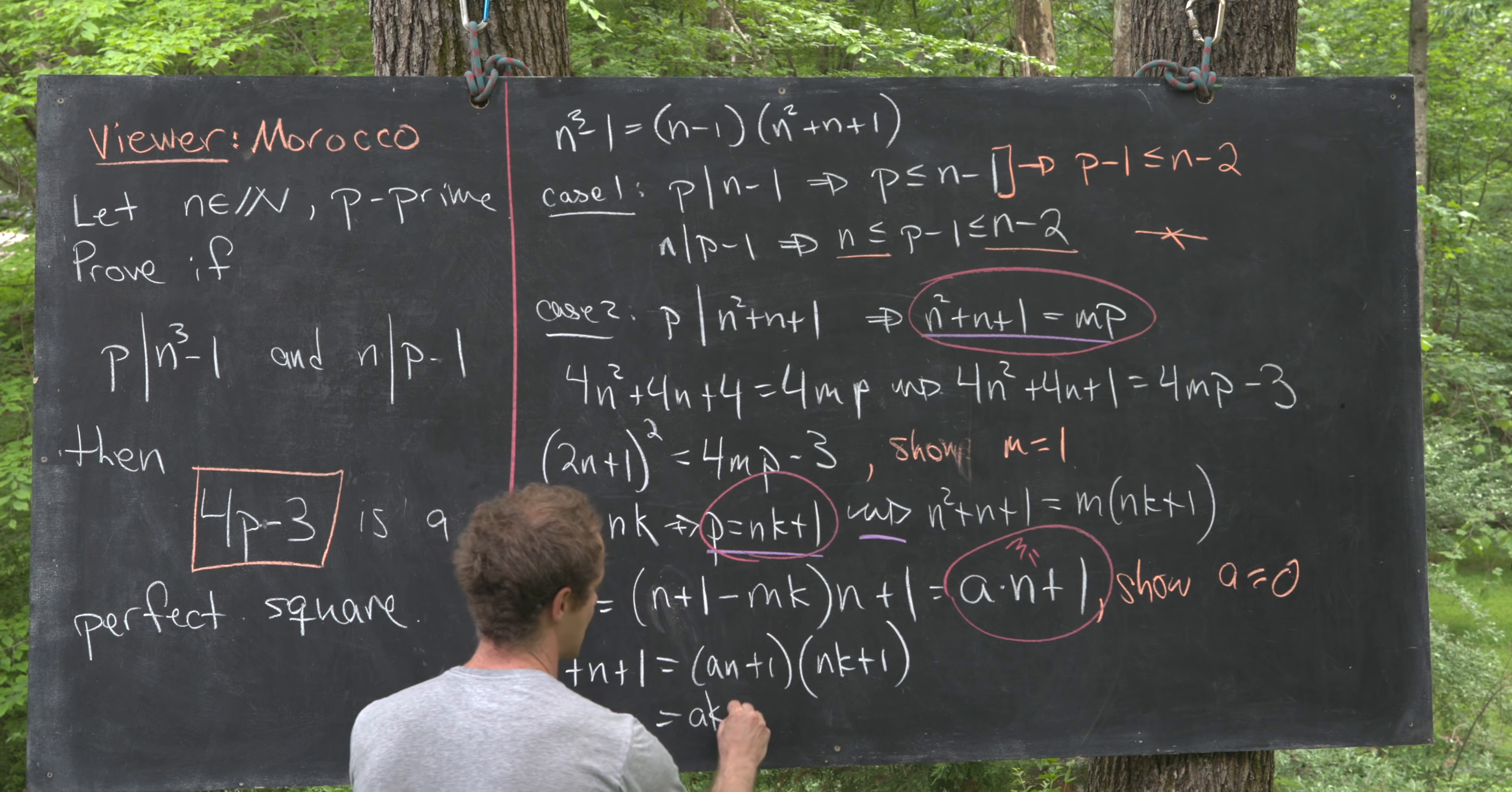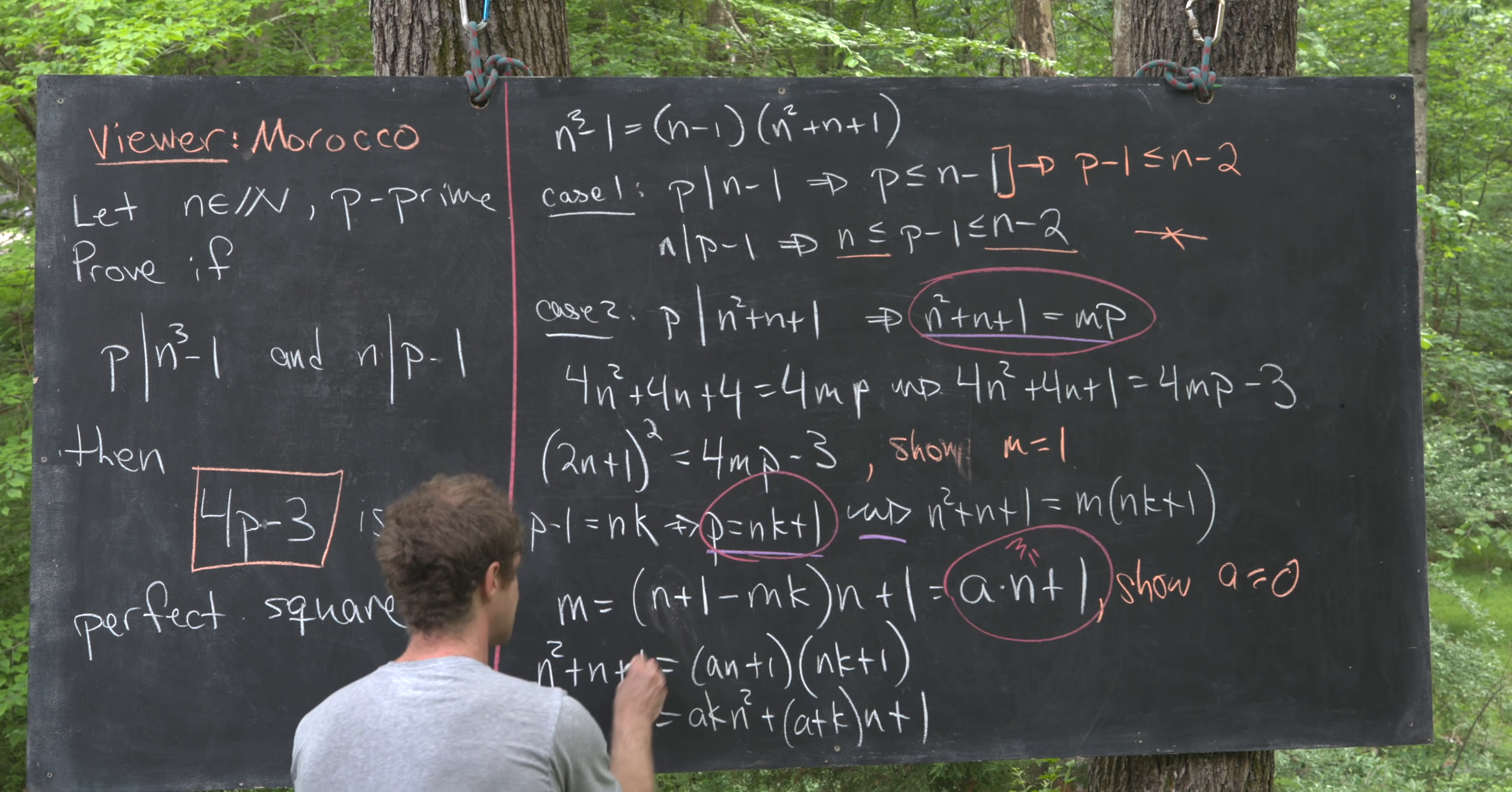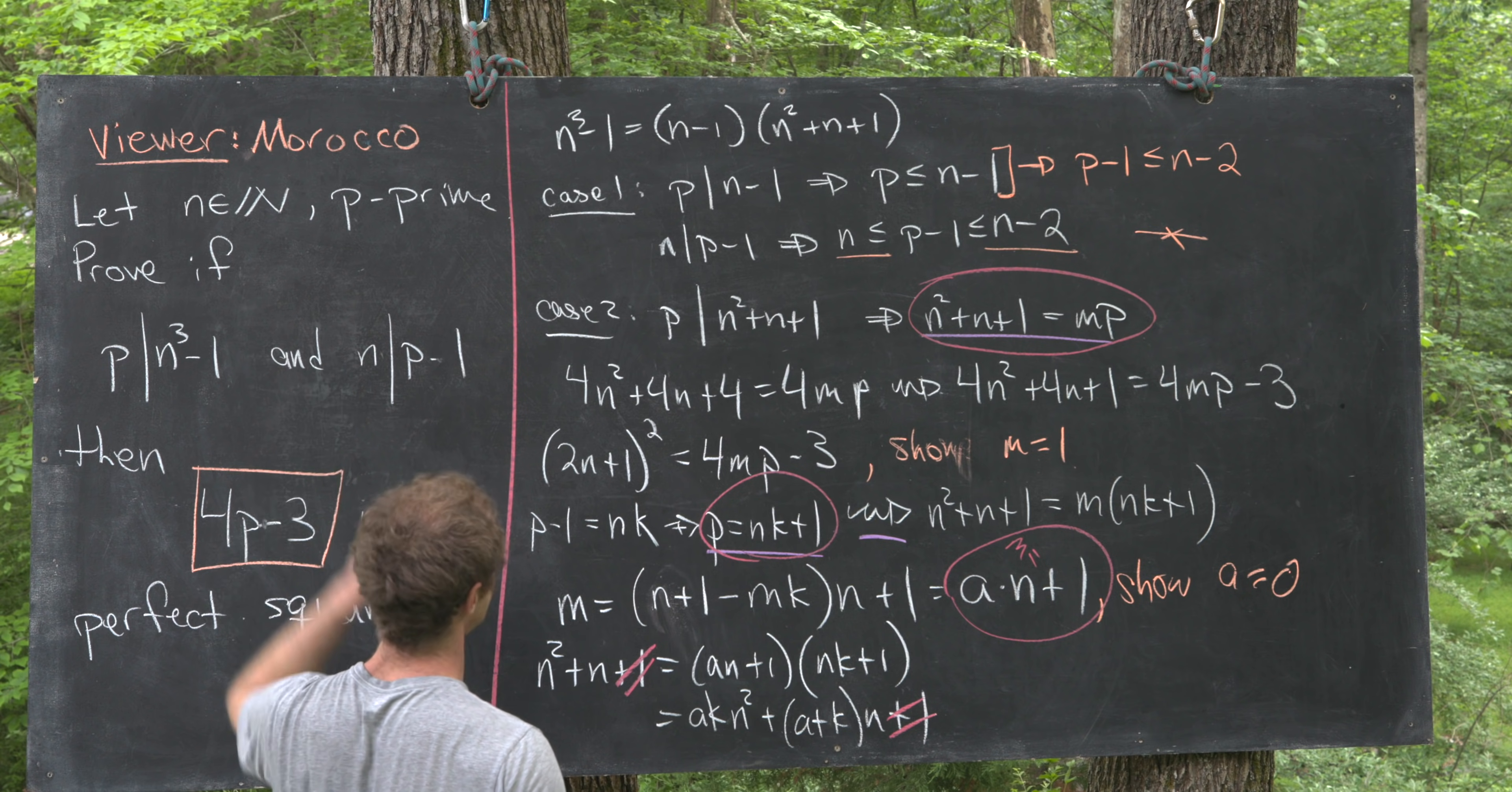We can multiply out this right-hand side to give us ak times n² plus (a+k) times n plus 1. Now we can cancel a 1 from both sides of the equation, and then also cancel one factor of n from both sides of the equation.